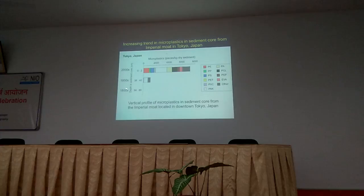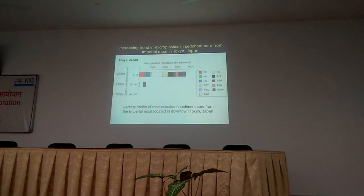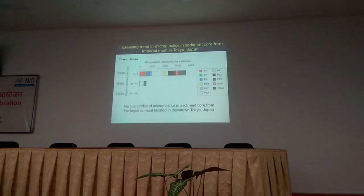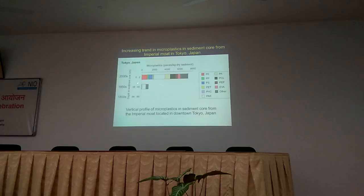At that time, we had no plastic production, therefore we observed no plastic. This is very much feasible. And in the 1950s, we observed small amounts of microplastic in the middle layer of the sediment core.